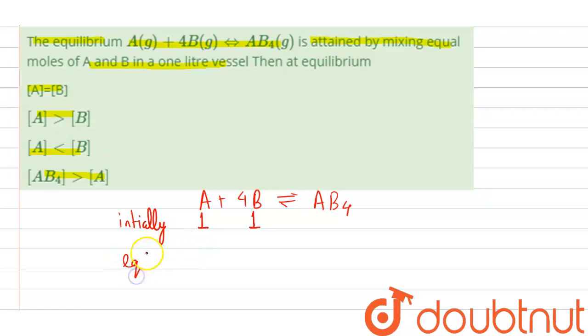Now at equilibrium, what will happen? In A we have 1 - x, and in B we have 1 - 4x.